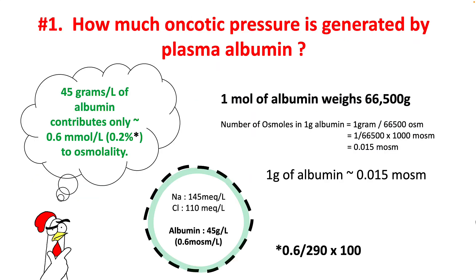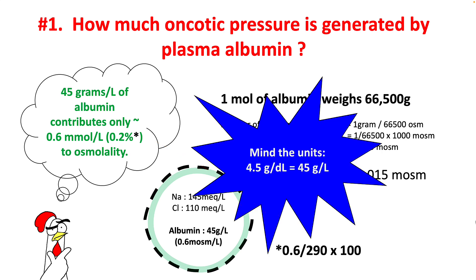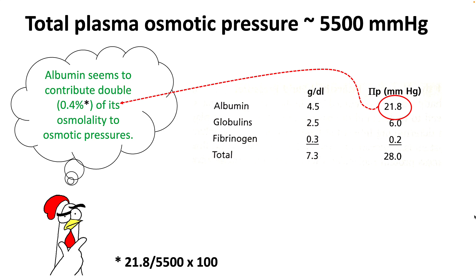Since the molecular weight of albumin is 66.5 kilodalton, a gram of albumin contributes to 0.015 milliosmoles. That means 45 grams per liter of albumin contributes to only 0.6 millimoles per liter, which is 0.2 percent of total plasma osmolality. When you look at the osmotic pressure contribution by albumin, it actually contributes around 0.4 percent to the total osmotic pressure, which is double what would be expected from its osmolality.